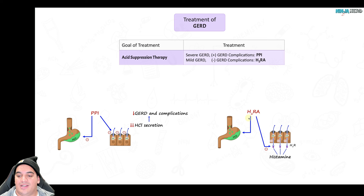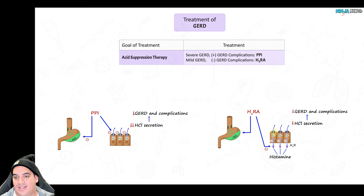H2RAs work by suppressing the histamine response at the receptor site — histamine normally stimulates hydrochloric acid production. Blocking histamine at that receptor reduces hydrochloric acid secretion and reduces GERD. For severe GERD, start with a PPI for eight weeks, review, and see if you can step down to an H2RA.